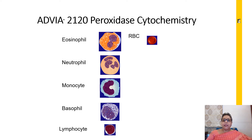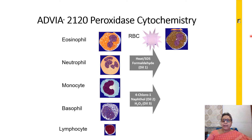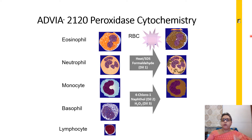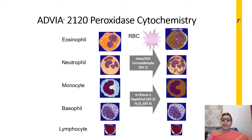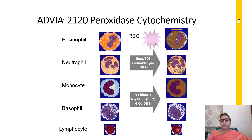The RBCs get lysed and the myeloperoxidase stain is applied to the cells — the WBCs — within the sample. Cells that are myeloperoxidase positive have granules that take up the stain with varying intensity: eosinophils stain the maximum, followed by neutrophils, then monocytes. Basophils and lymphocytes do not take up myeloperoxidase and therefore will be myeloperoxidase negative, clearly differentiating the positive from negative cells.